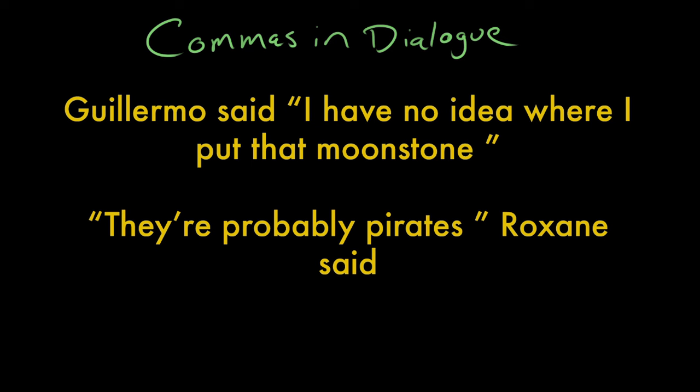Paige, would you read me this sentence? "Guillermo said, I have no idea where I put that moonstone." So we're starting into this sentence and we're going to use this comma as a ramp to divide between the utterance and what's called a dialogue tag. So: "Guillermo said," comma, "I have no idea where I put that moonstone." This is the end of his utterance, so we're going to put a period here.